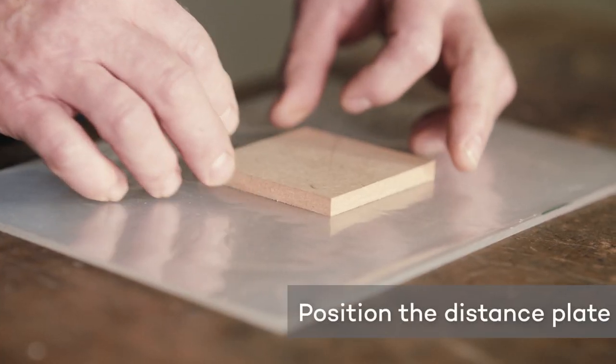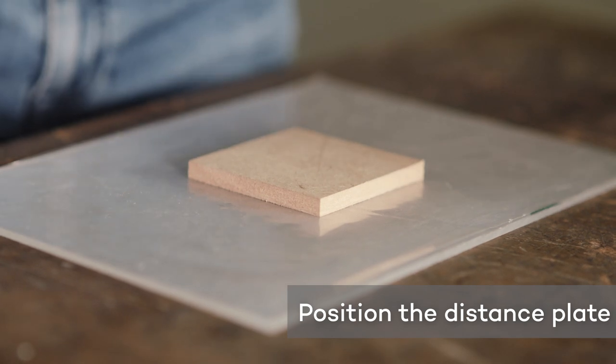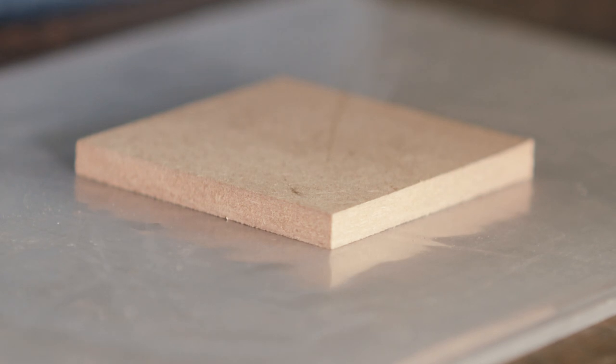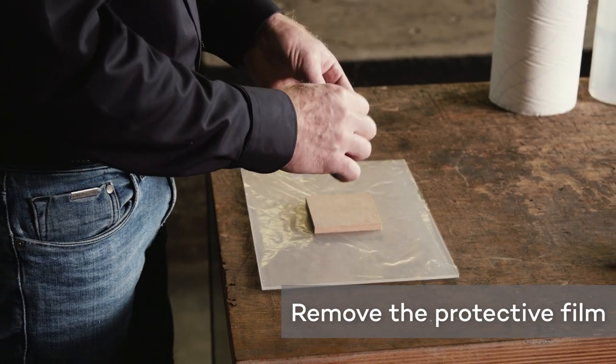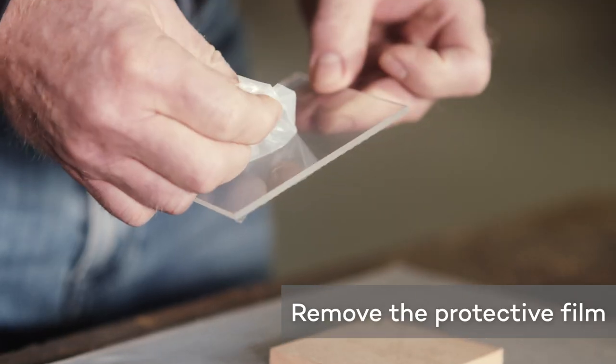The distance plate should be smaller than the Plexiglas sheet, so that the excess adhesive can run off on the side and the sheet does not become adhered to the underlay. Remove the protective film from the Plexiglas at the places where the adhesive is to be applied.